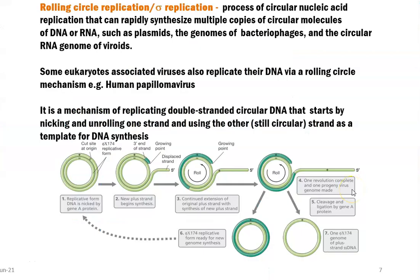Next we look at the mechanism of the rolling circle replication. In this mechanism, the double-stranded circular DNA molecule replicates by first starting a nicking — that is, a cut is caused in the double-stranded DNA molecule — and then unrolling of one strand fully, whereas the other strand is used as a template strand for DNA synthesis.